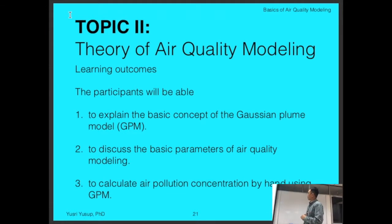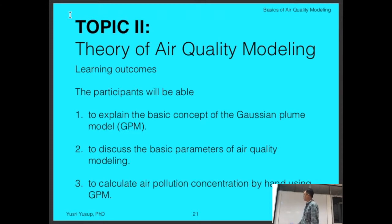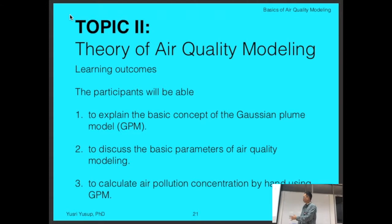These are the learning outcomes for this topic. By the end, students will be able to: first, explain the basic concept of the Gaussian plume model, or GPM — this may be the first time you've heard of this concept; second, discuss the basic parameters of air quality modeling using the GPM; and third, calculate air pollution concentration using the Gaussian plume model. We can use the GPM at the most basic level by hand calculation, and we'll go through an example for you to do that.